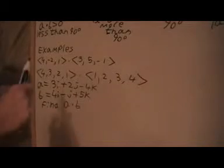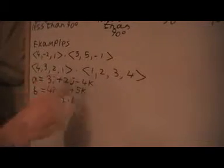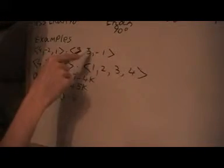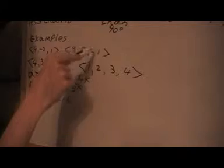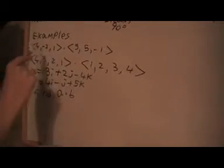I've got some examples here to show you how this works out. We have components a1, b1, a2, b2, and a3, b3. The dot product is going to be equal to a1*b1 plus a2*b2 plus a3*b3.